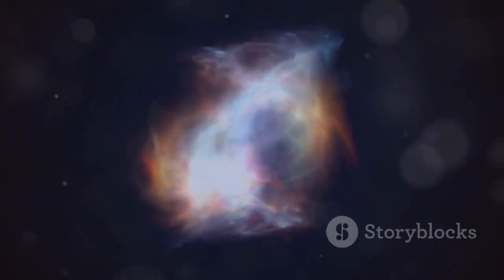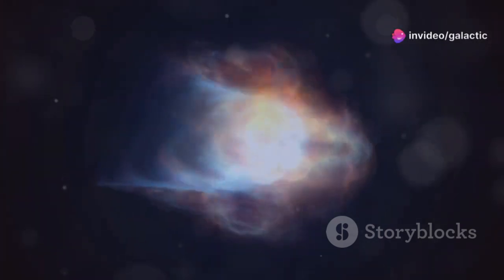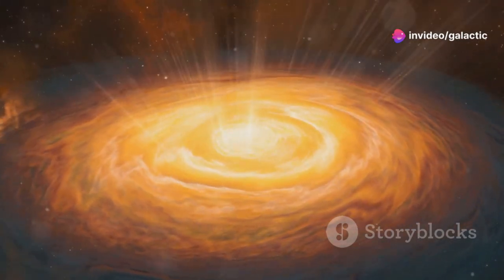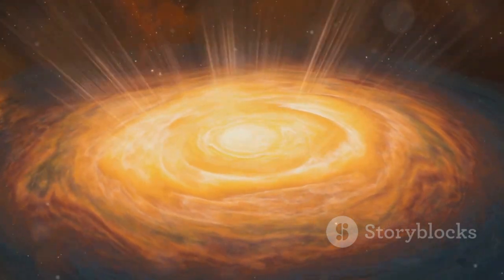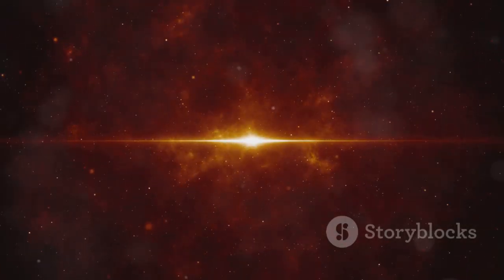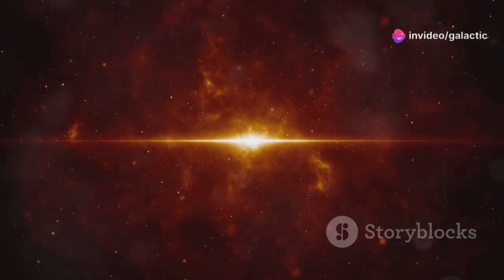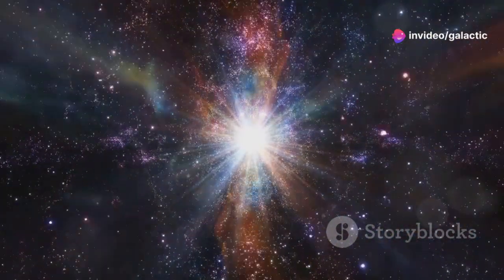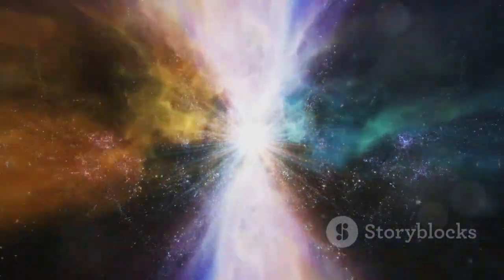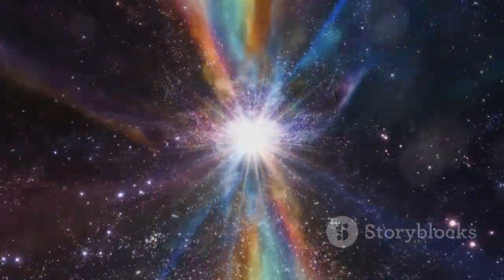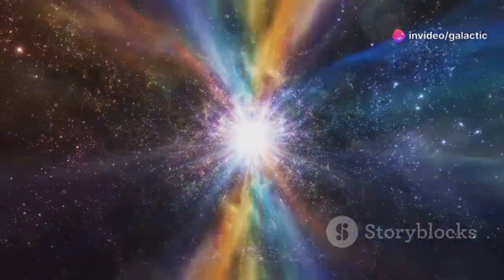Webb's infrared vision is particularly crucial in studying Betelgeuse. Infrared light penetrates the cosmic dust that often surrounds dying stars, allowing Webb to see through the obscuring material. As a cool red supergiant, Betelgeuse emits a significant portion of its energy as infrared radiation. This makes it an ideal target for Webb's infrared instruments, which can capture this radiation in great detail.